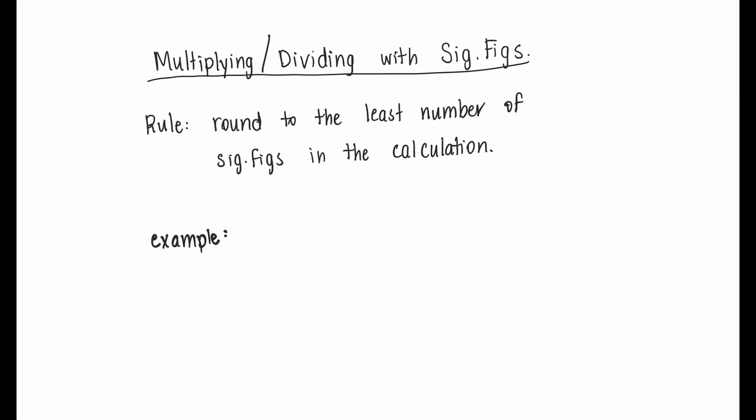Now let's look at a different example where we're dividing with significant figures. Let's start with 1.094 divided by 12. Again, the first step is to just put this into your calculator and see what we're working with. In this division, you should end up with 0.09116667, etc.